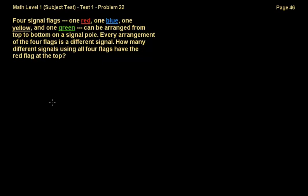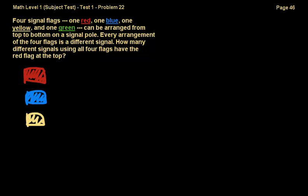Problem 22 states: four signal flags — one red, one blue, one yellow, and one green — can be arranged from top to bottom on a signal pole. Every arrangement is a different signal. How many different signals using all four flags have the red flag at the top? This is a permutation problem because order matters — having flags in a different position creates a different signal. I'll demonstrate this by drawing all possible arrangements.